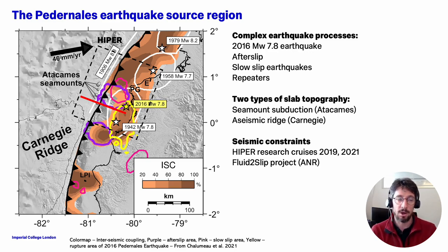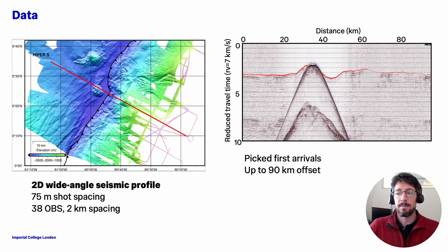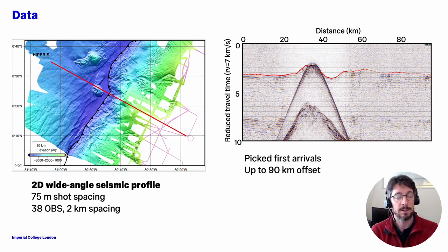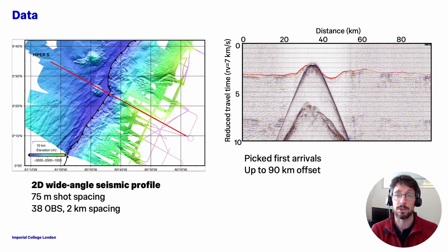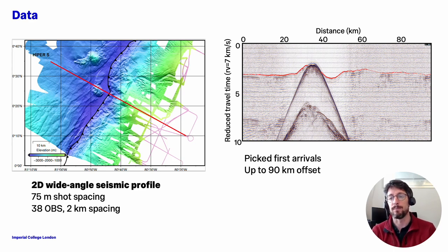I'll be showing some constraints on the structure from seismic tomography inversion based on data from the HIPAA. This is a map of the area and I am presenting in particular a 2D wide-angle seismic profile that crosses the subduction zone from west to east. It goes over one of the Atacames seamounts and then crosses into the forearc, and at the eastern end crosses into the source region of the Padernales earthquake. It was shot at 75 meter shot spacing and recorded on 38 ocean bottom seismometers at 2 km spacing.